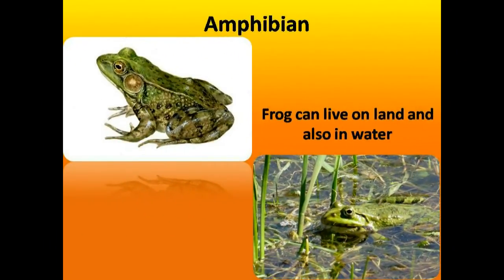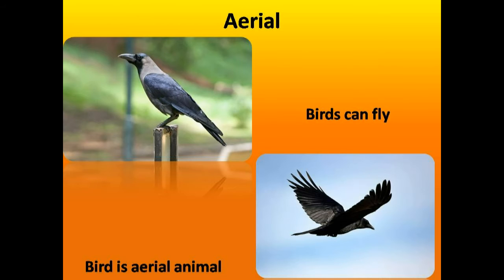Have you seen frogs hopping on the road or in a field? Frogs can live in water too — that's why frogs are amphibians. Amphibians can live on land and also in water. We know that birds can fly — they are called aerial animals.